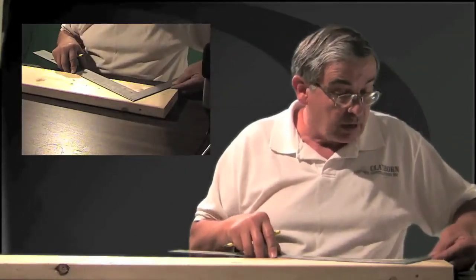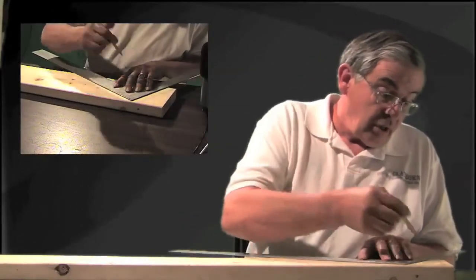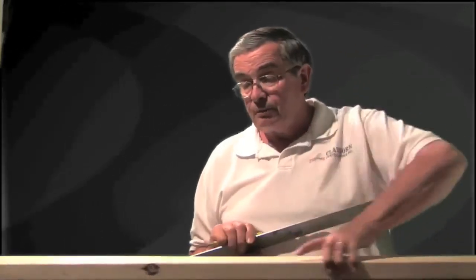We slide our framing square back down again and we scribe again on the six inch side. This is where we're going to cut. We're going to cut at our bird's mouth and we're going to cut for our overhang.